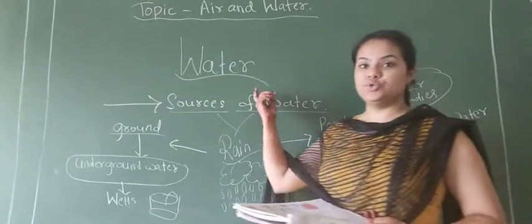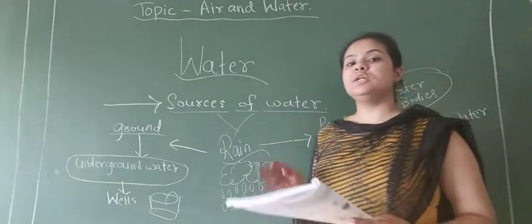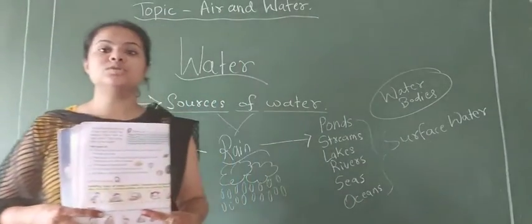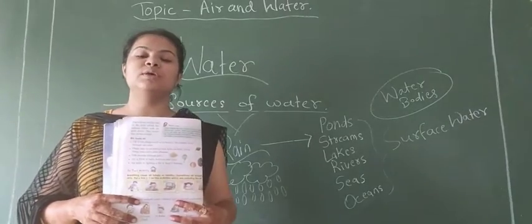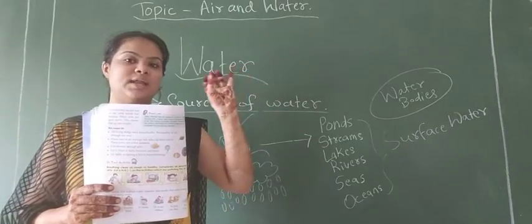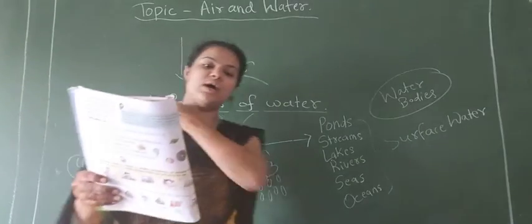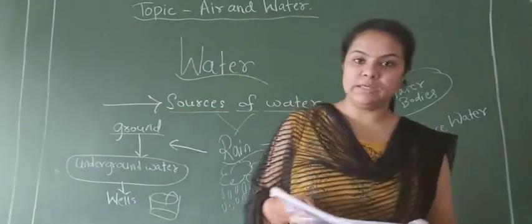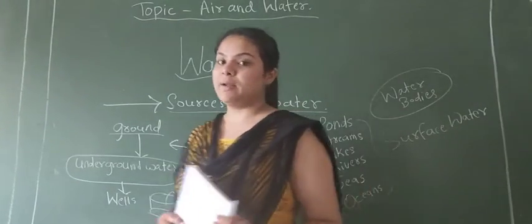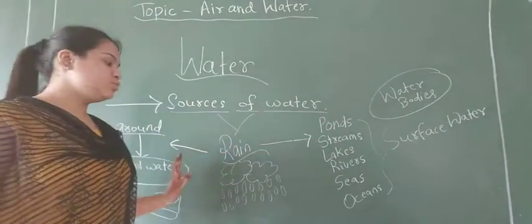All living beings need water to live. Living beings are those who can live, who can grow and understand everything - like plants, animals and we people, human beings. These all are called living beings. Rain is the main source of water on the earth.